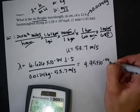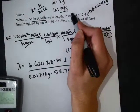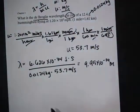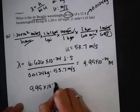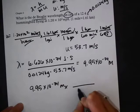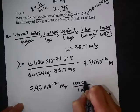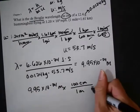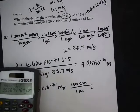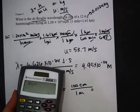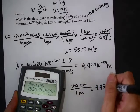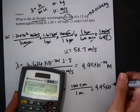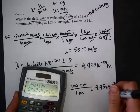So I'll convert that. I know there's 100 centimeters in one meter, so I'll multiply so that the meters cancel. And it's 9.95 times 10 to the minus 32 centimeters.